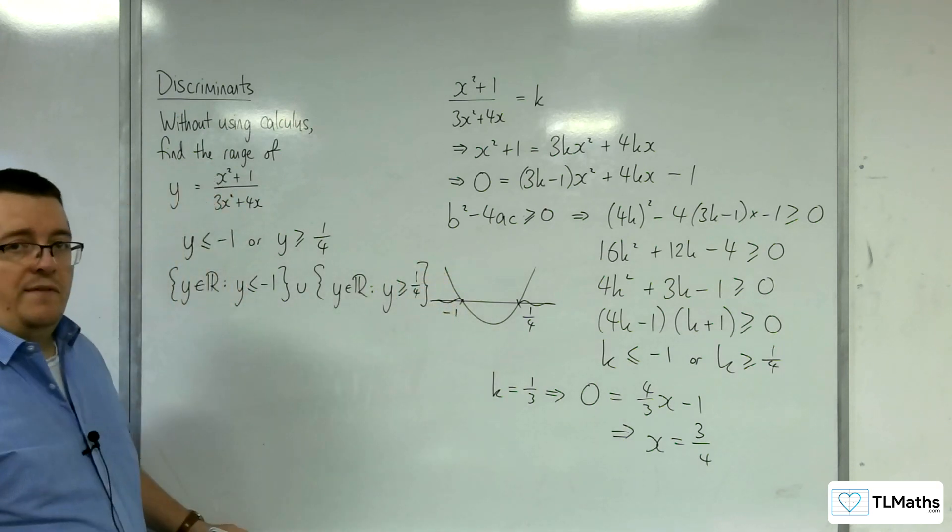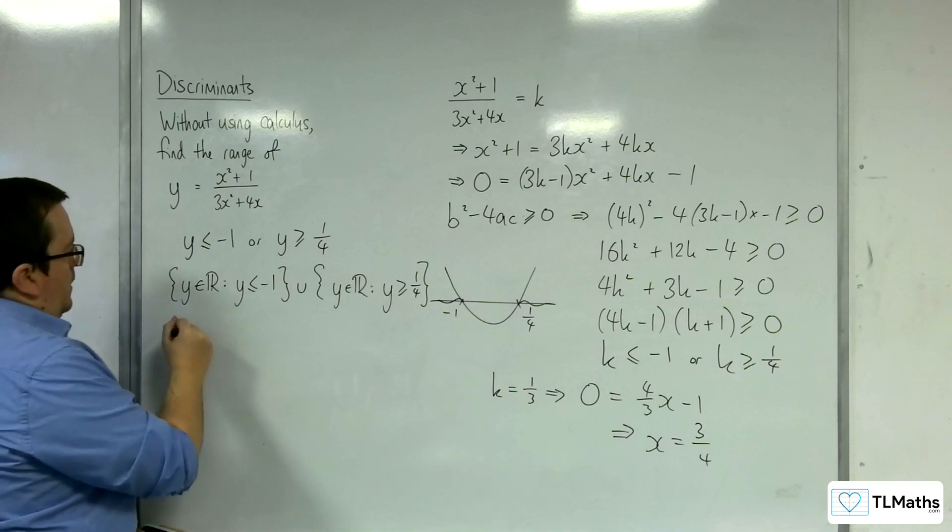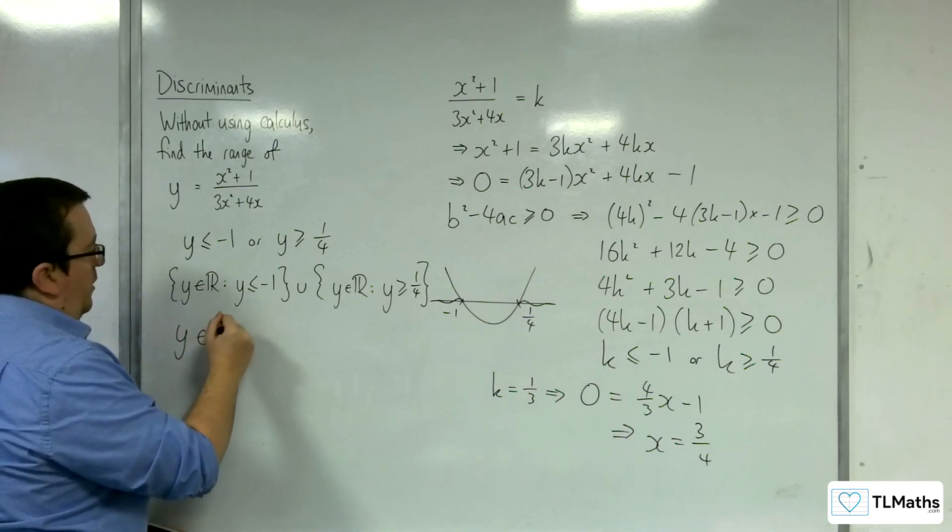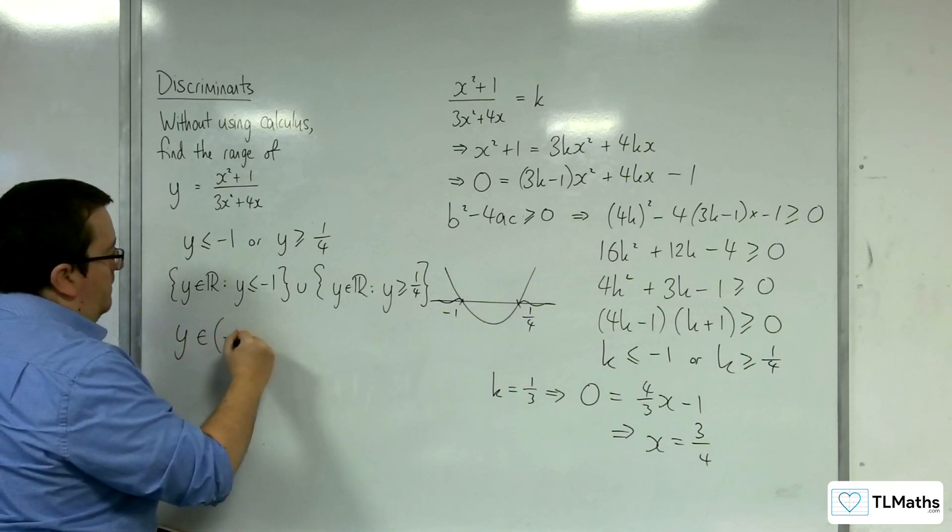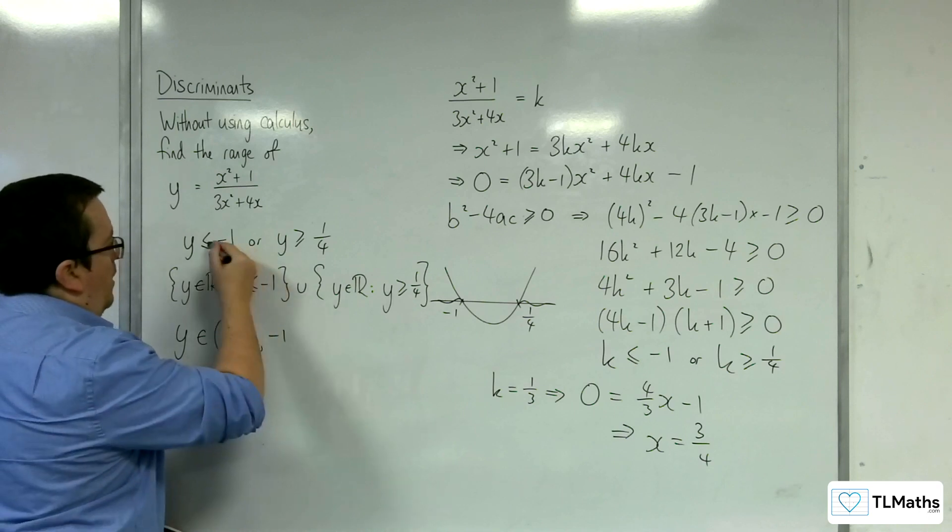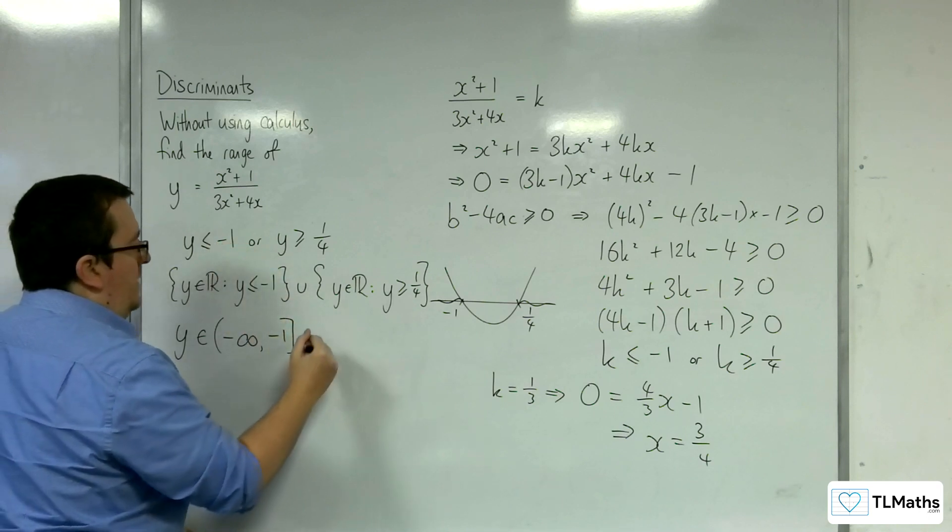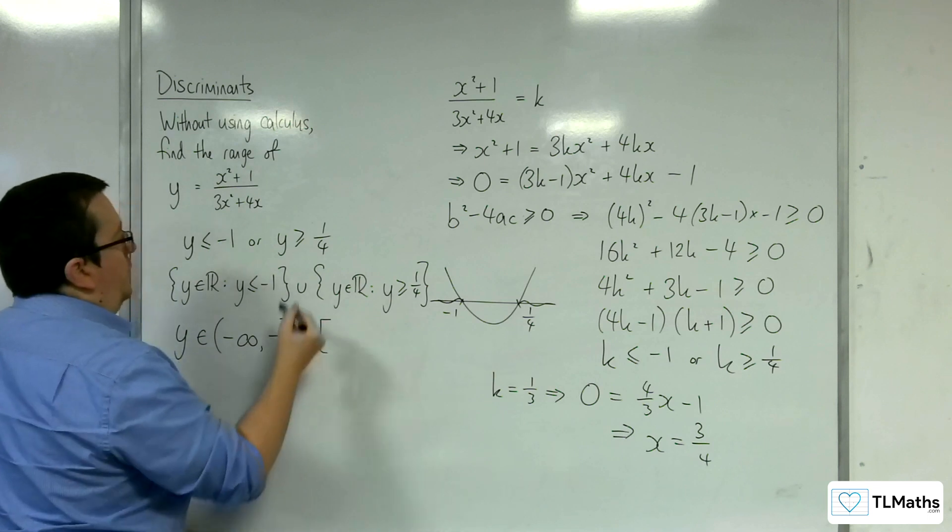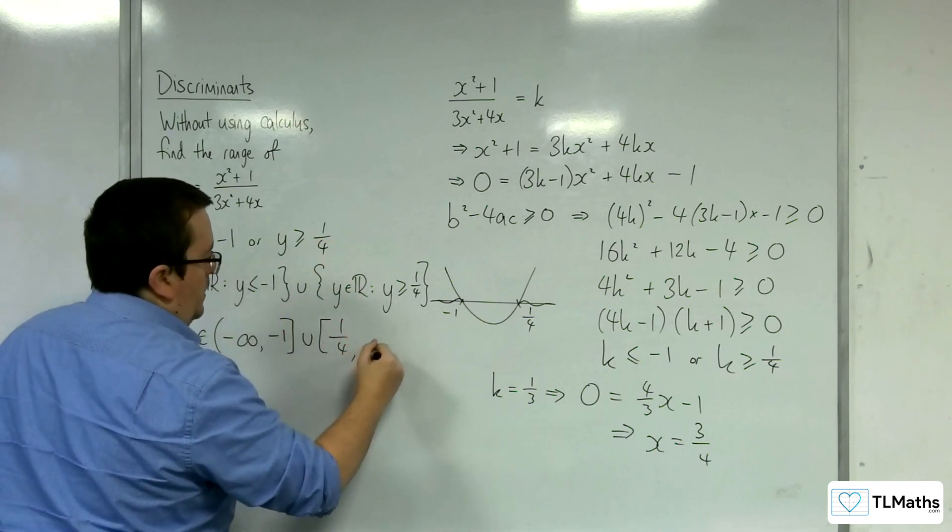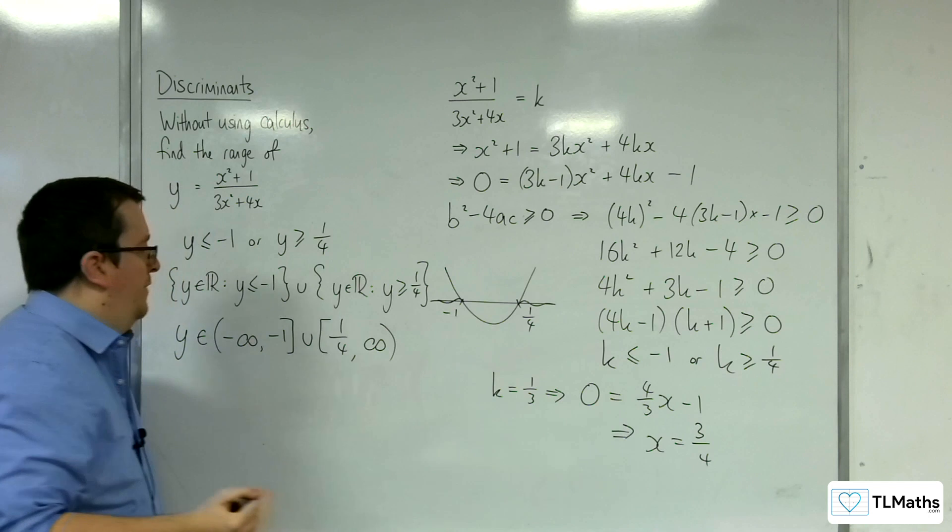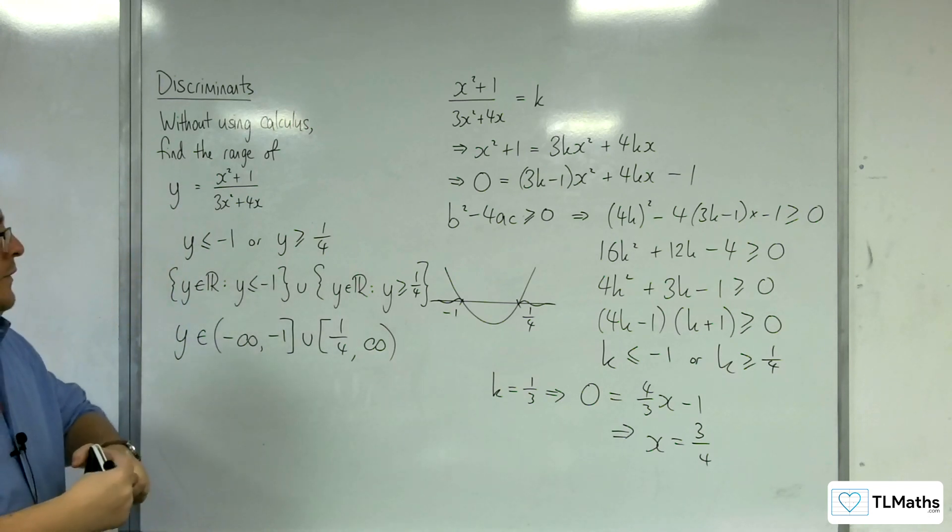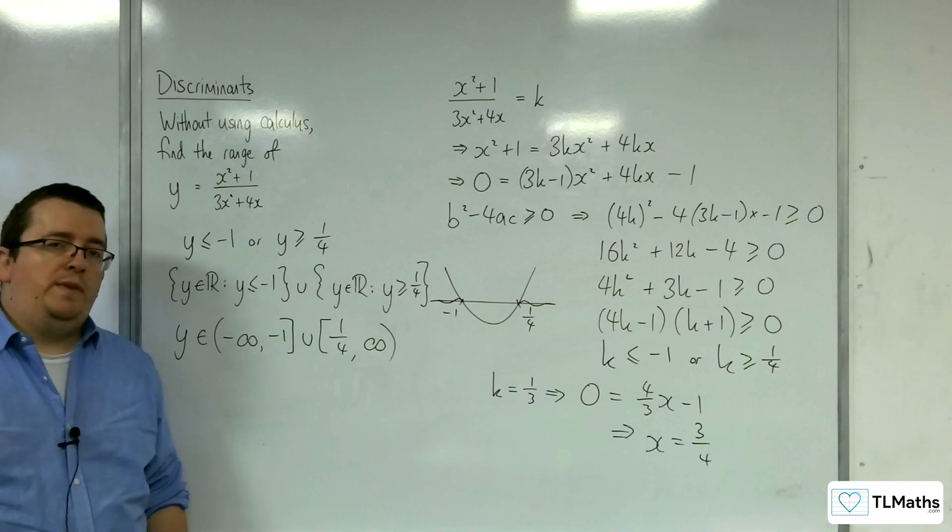Or you could be asked to give it in interval notation. So y belongs to, so at minus infinity, we've got to have a curved bracket. Then at minus 1, we're including that, so that's a square bracket. Union, square bracket with the quarter, and curved bracket up to infinity. And so that is how we can find the range for this function without using calculus.